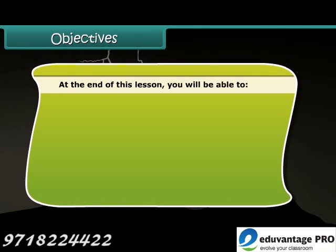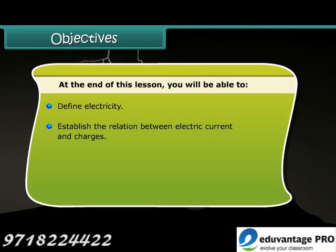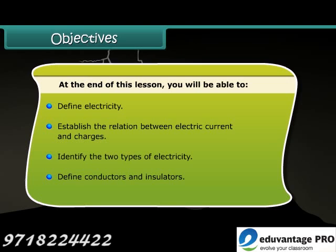Objectives: At the end of this lesson you will be able to define electricity, establish the relation between electric current and charges, identify the two types of electricity, and define conductors and insulators.